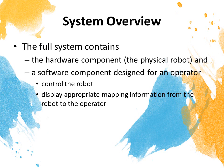The full system will contain the hardware component, which is all the physical components which the robot is made from, and a software component designed to find operators, which contains a controller to control the robot, to make the robot communicate with the operator, as well as display appropriate mapping information from the robot to the operators.